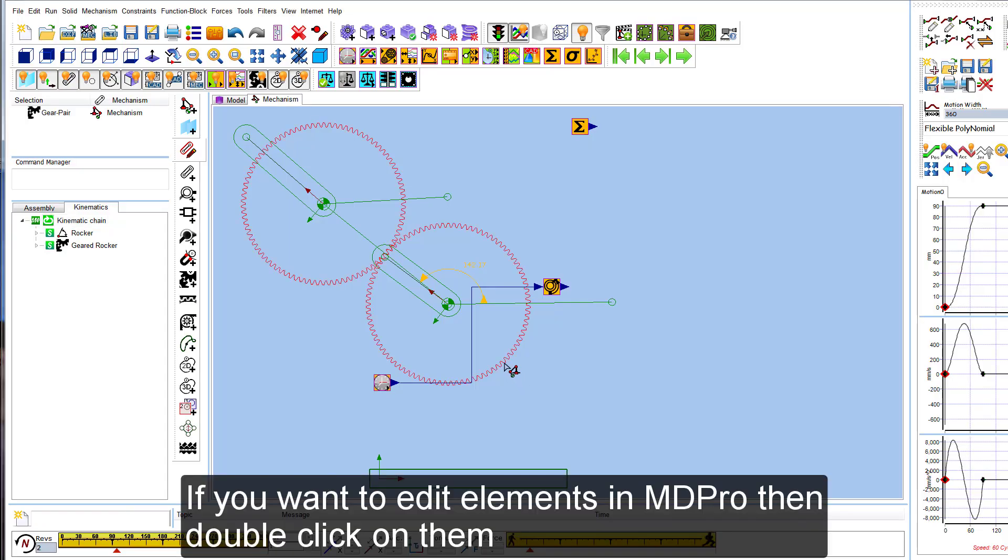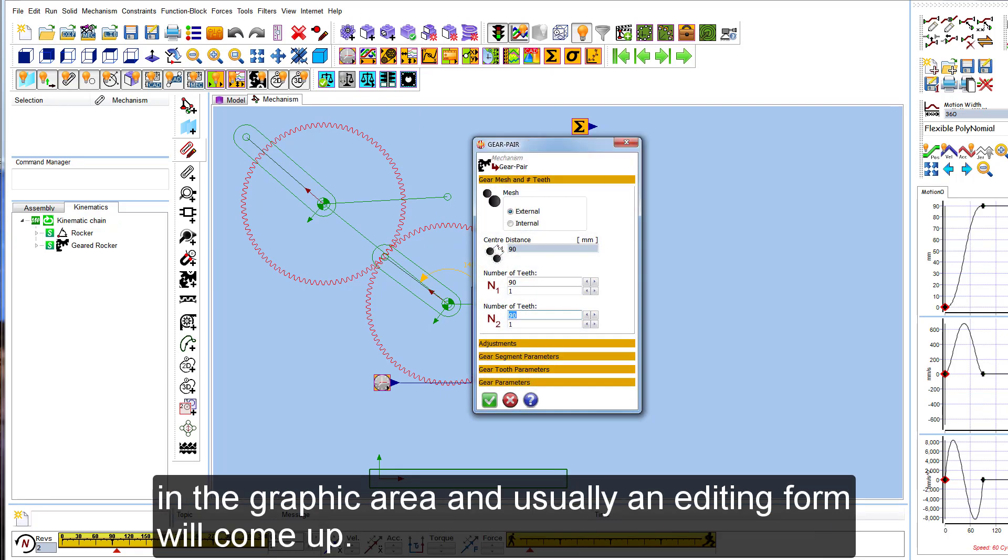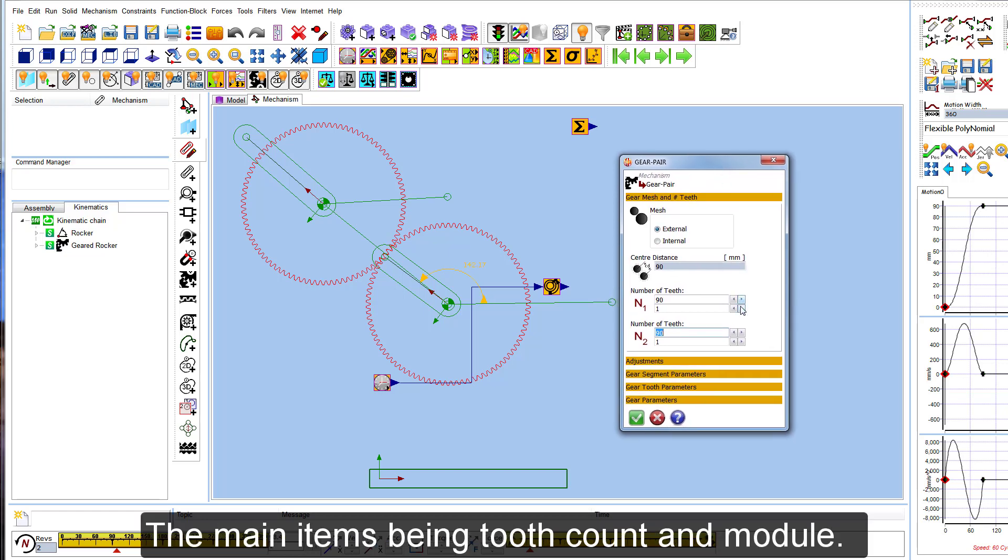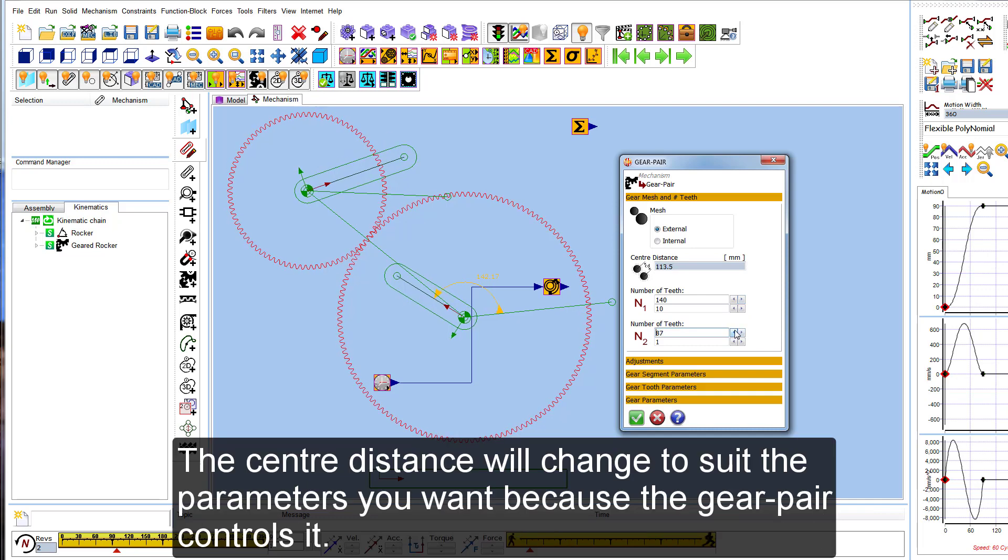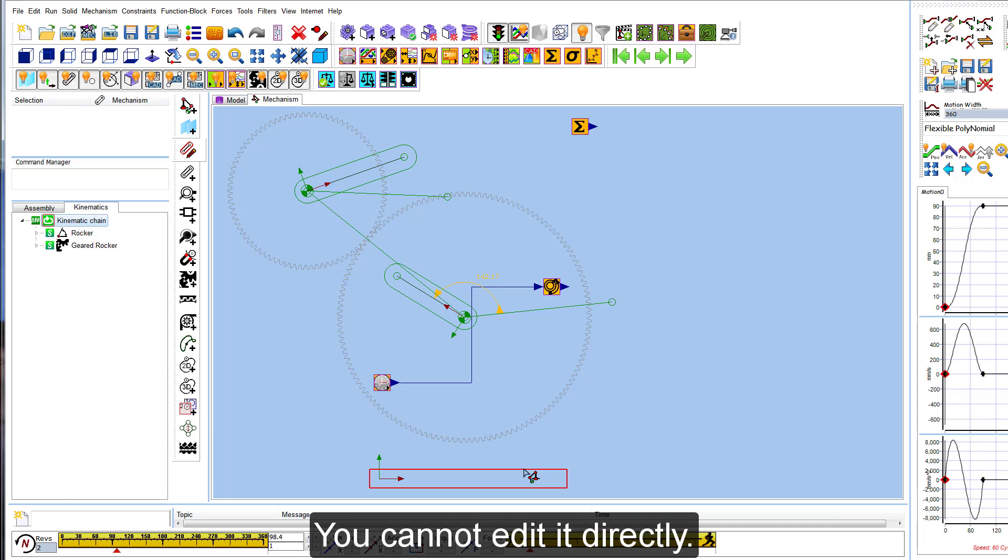If you want to edit elements in MD Pro then double click on them in the graphic area and usually an editing form will come up. With gear pairs there is a lot you can edit, main items being tooth count and module. The centre distance will change to suit the parameters you want because the gear pair controls it. You cannot edit it directly.